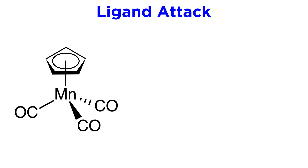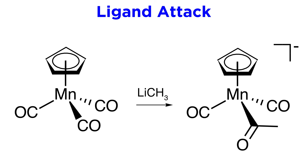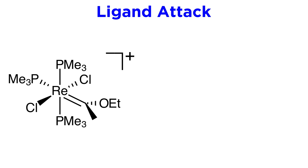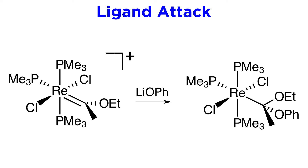With that understood, let's check out some examples. Here is a manganese complex reacting with methyl lithium. This methyl is a very strong nucleophile, and we have some carbonyls here, so it is quite clear that the methyl will attack one of these carbonyls to produce an acyl metal species. Here's another example, a rhenium complex reacting with lithium phenoxide. Again, this reagent is nucleophilic, so where might it attack? Well, we have this alkylidyne, so the most likely reaction is attack on this carbon, which pushes the pi bond up onto the metal to yield this alkyl metal species.